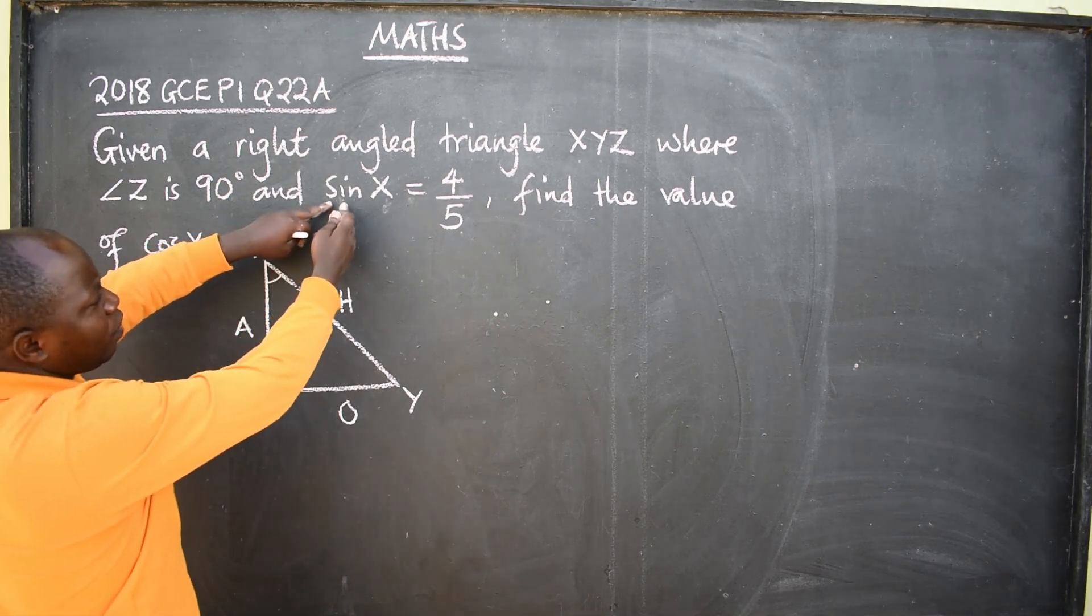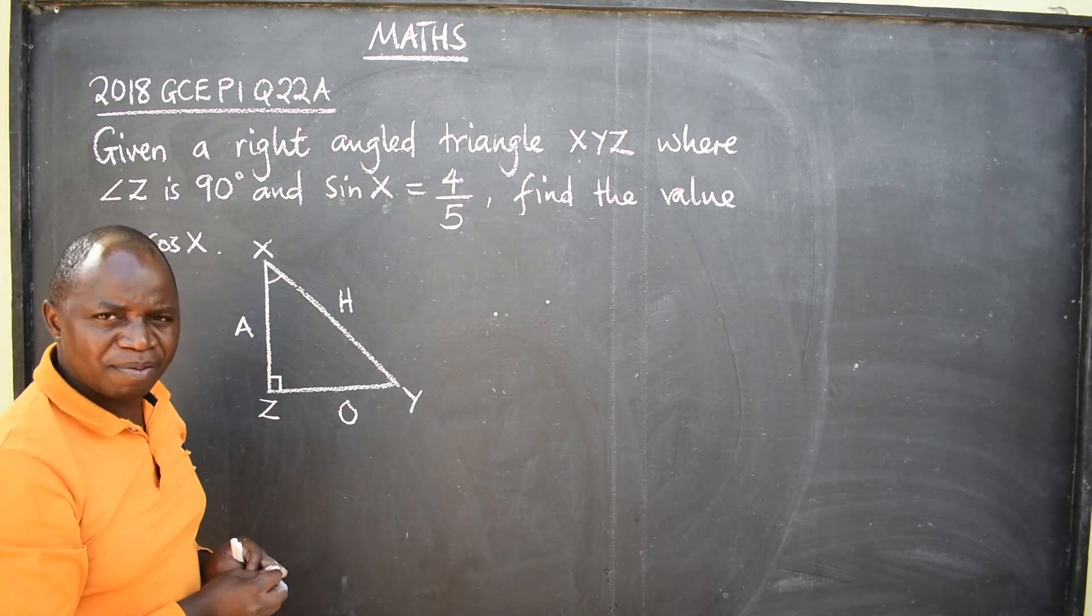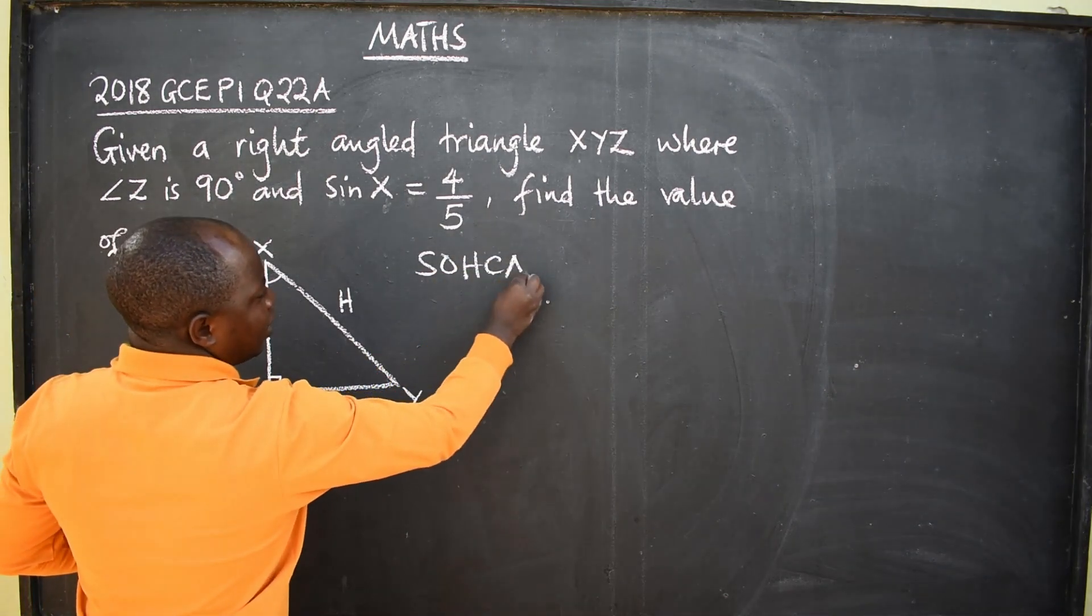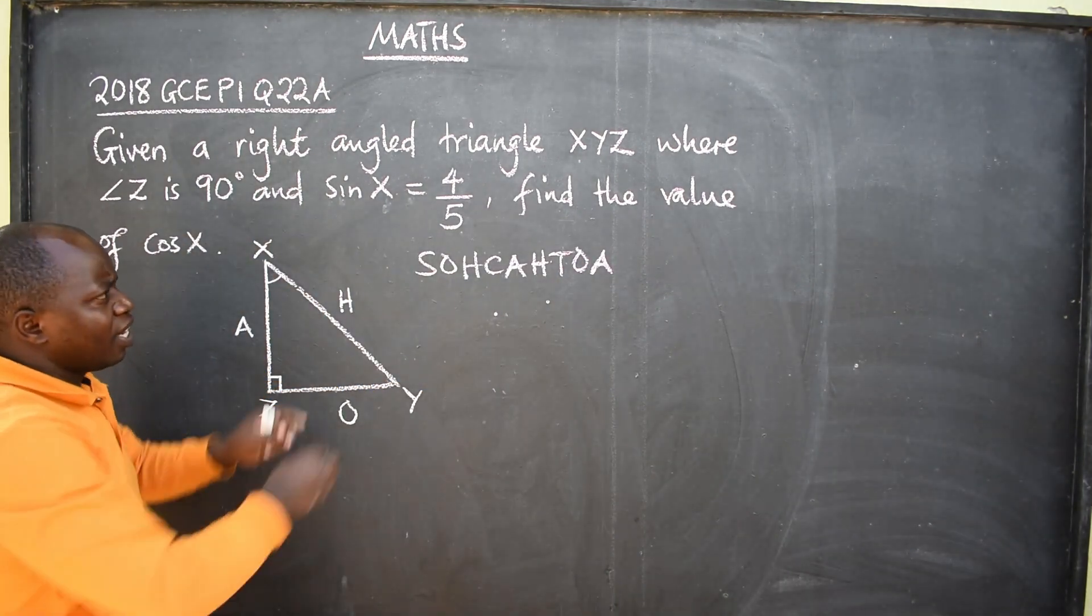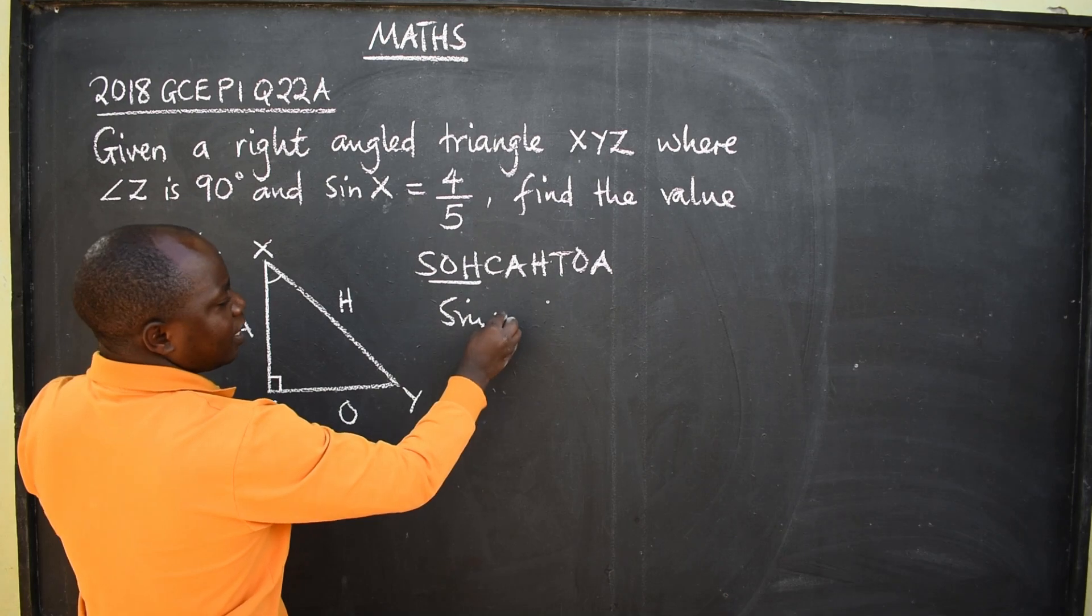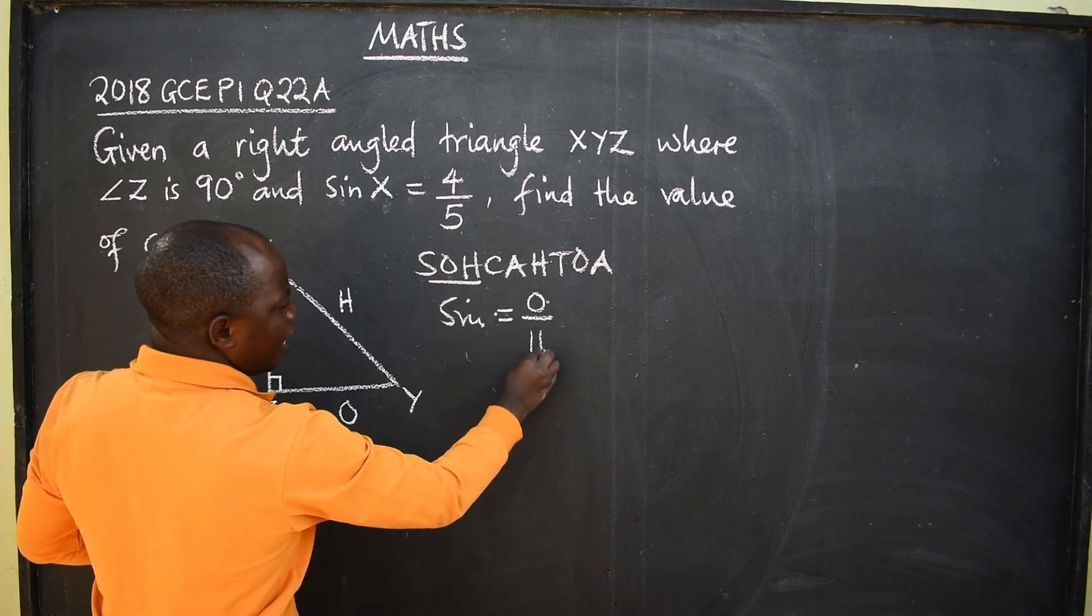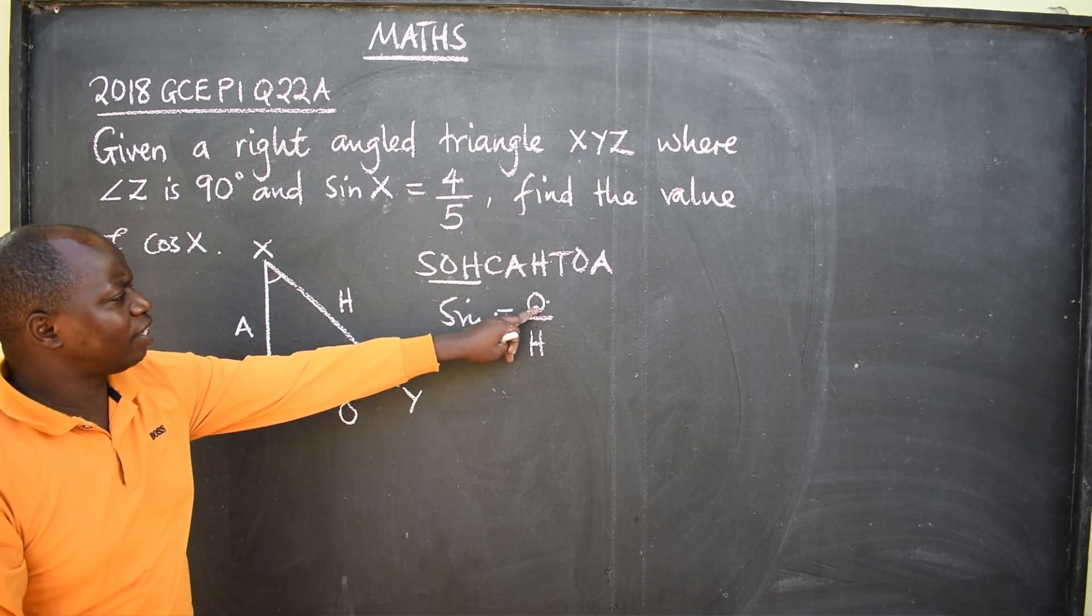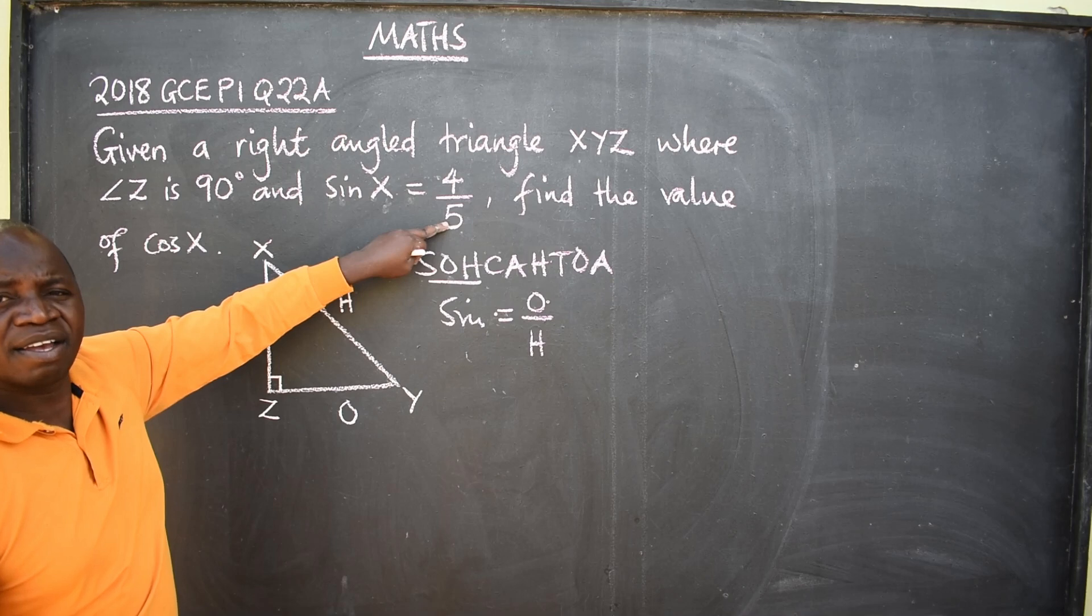Now, we are told that sin x is equal to 4 over 5. Do you know where it is coming from? SOHCAHTOA. Sin is here, meaning sin is always equal to opposite over hypotenuse. And this is exactly what we are going to substitute. Where there is O, we are going to put a 4. Where there is H, we put a 5.